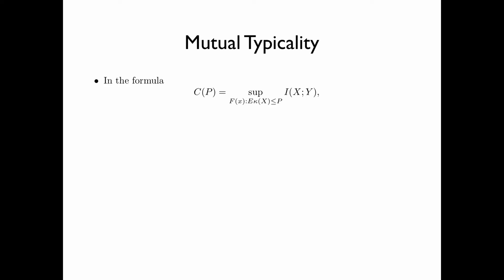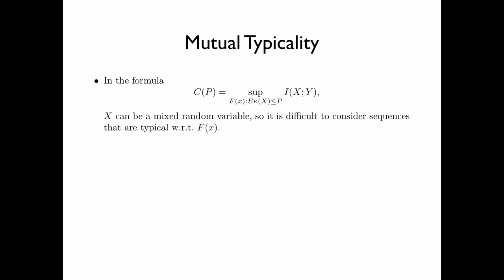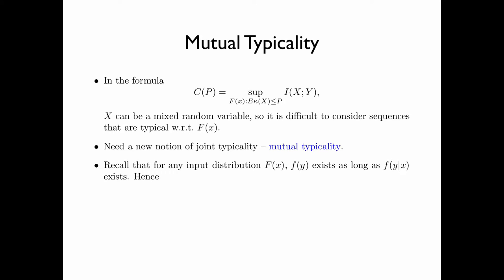In Section 11.3.2, we proved the achievability part of the channel coding theorem. In the formula defining C(P), the input random variable X can be a mixed random variable, and so it is difficult to consider sequences that are typical with respect to the input distribution. For this reason, we need a new notion of joint typicality called mutual typicality. For any input distribution f(x), the PDF of the output random variable f(y) exists as long as the conditional PDF f(y|x) exists. Hence, the mutual information between X and Y can be written as the expectation of log(f(y|x) / f(y)).